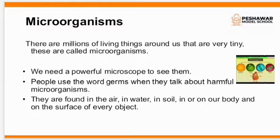Microorganisms. What are microorganisms? There are millions of living things around us that are very tiny. These are called microorganisms. We are not able to see this kind of organisms through our naked eyes. For that we need a special microscope to see or study about these microorganisms. People use the word 'germs' when they talk about harmful microorganisms. They are found in the air, in water, in soil, in or on our body, and on the surface of every object. But we can't see them with our naked eyes.